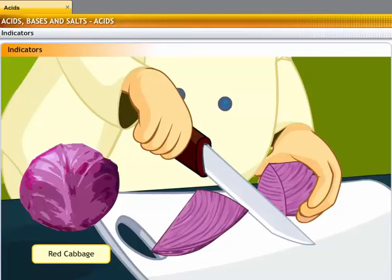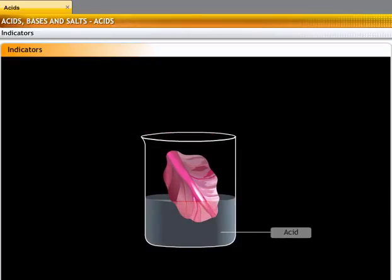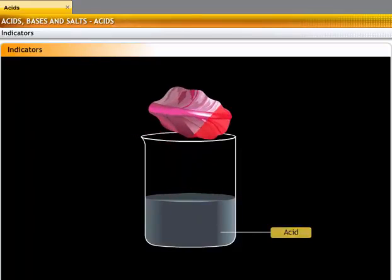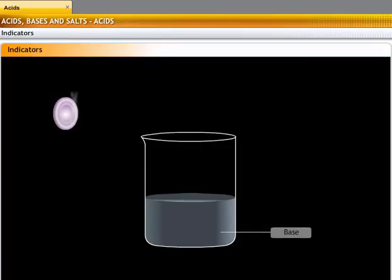An acid-base indicator is one which exhibits different color in acids and bases. Red cabbage is a visual indicator used to detect acids. The cabbage leaves are purplish in color but turn red in the presence of an acid. Onions are called olfactory indicators because of their characteristic smell. This smell is destroyed by the action of a base.